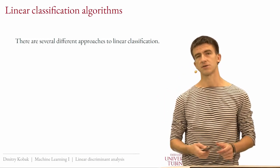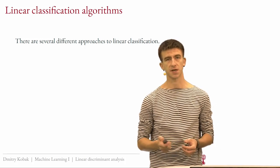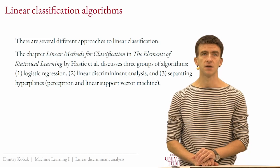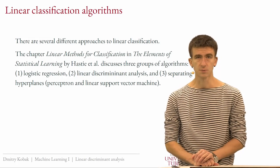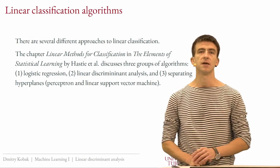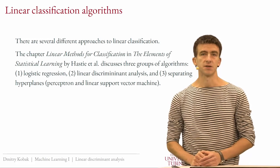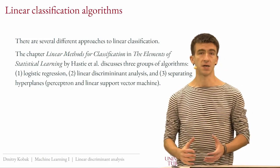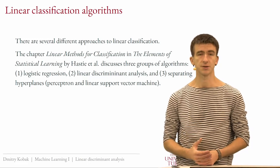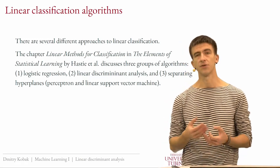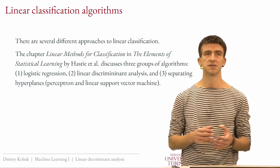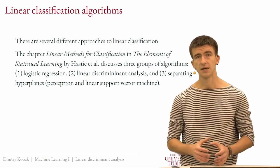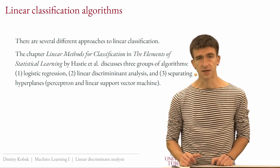There are several different ways to approach the linear classification problem. If you open the Elements of Statistical Learning, one of the textbooks I always recommend, you will find a chapter called linear methods for classification. It consists of three parts: logistic regression, linear discriminant analysis, and separating hyperplanes, which talks about methods like perceptron and linear support vector machines.